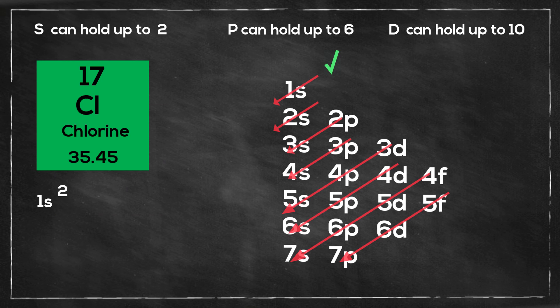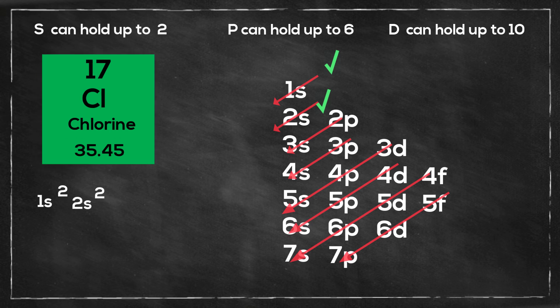Then I move to the 2s, so that will be 2s2. Then I move to the p orbital, and it can take up to 6, so that will be 2p6. Then I'll move to the s orbital, 3s2. So that leaves 5 left over, because at this point I've used up 12 electrons, so that will be 3p5.